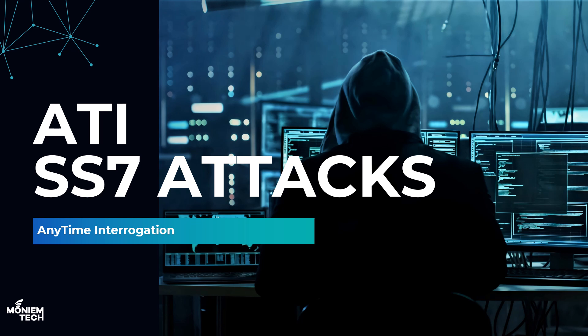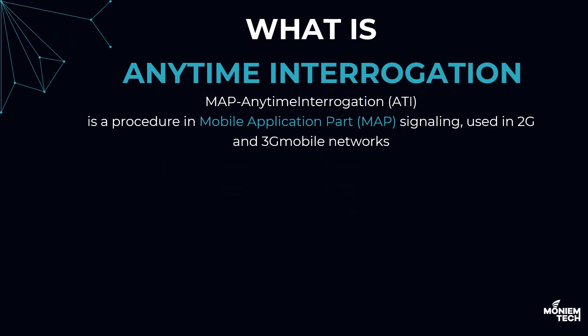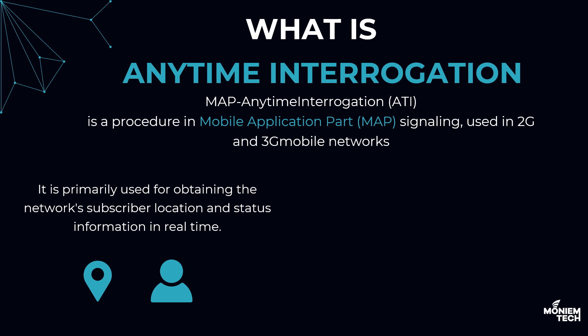Welcome to Monam Tech. In this video I will explain a very important procedure in the SS7 system called ATI, or Anytime Interrogation. The MAP protocol, or Mobile Application Part, is an application protocol in the SS7 layer used in 2G and 3G. ATI is used to obtain subscriber location and status information from the network in real time across different use cases.